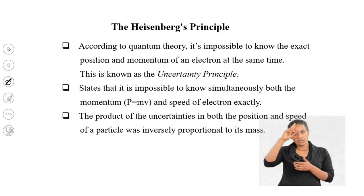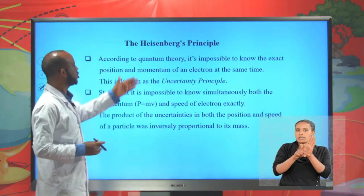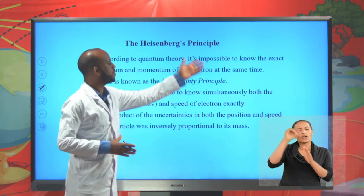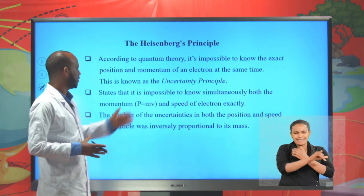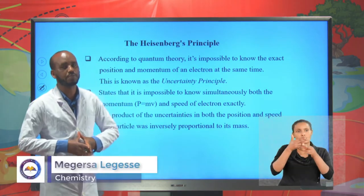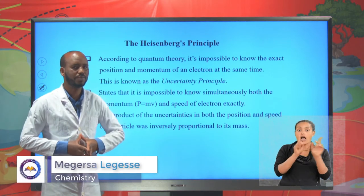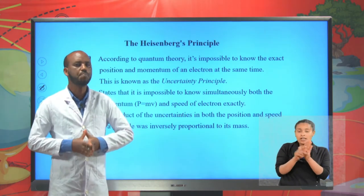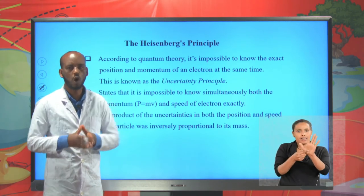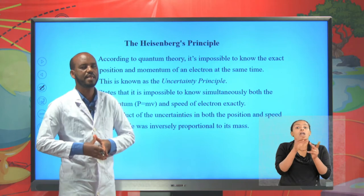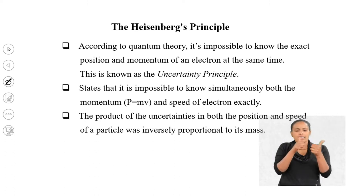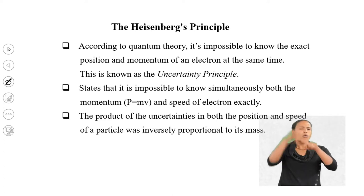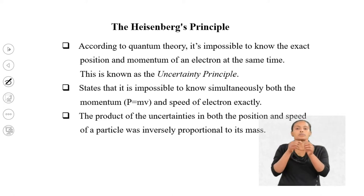The Heisenberg's Uncertainty Principle. According to quantum theory, it is impossible to know the exact position and momentum of an electron at the same time — this is known as the uncertainty principle. The Heisenberg's Uncertainty Principle states that it is impossible to know simultaneously both the exact momentum and exact position of an electron.